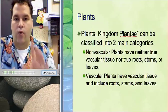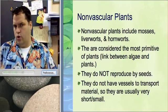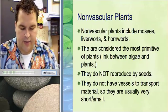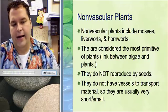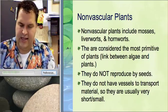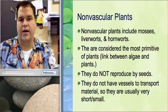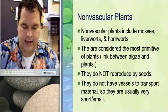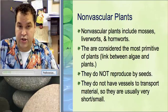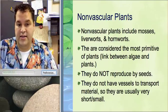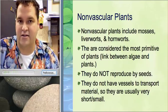Let's look at the non-vascular plants first. These include mosses, liverworts, and hornworts — mosses obviously being the most common. They grow generally near a body of water or somewhere excessively wet. They are considered the more primitive plants — kind of the missing link between plants and algae. Algae are singular single-celled protists, whereas plants are multicellular. Non-vascular plants do not produce seeds. They reproduce using spores, and they don't have vessels — that's what the name means.